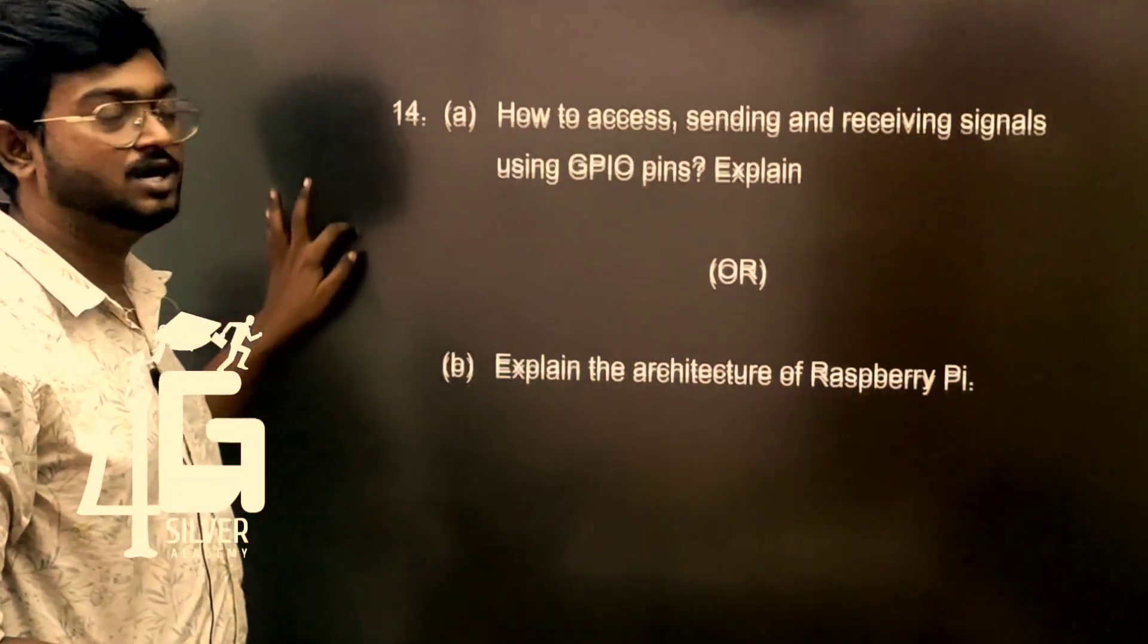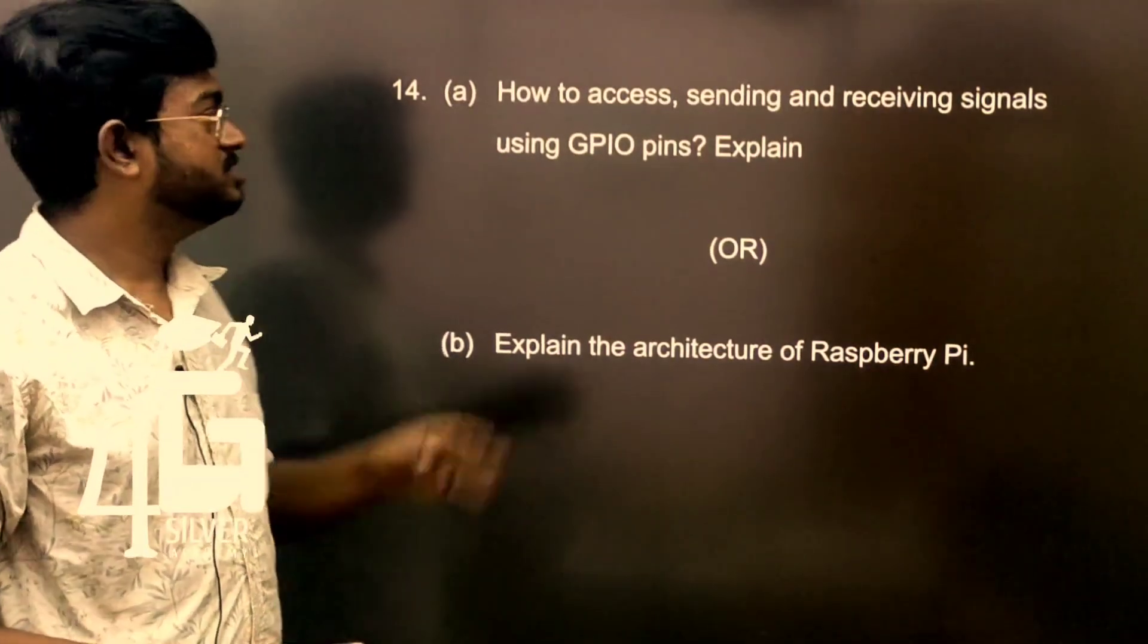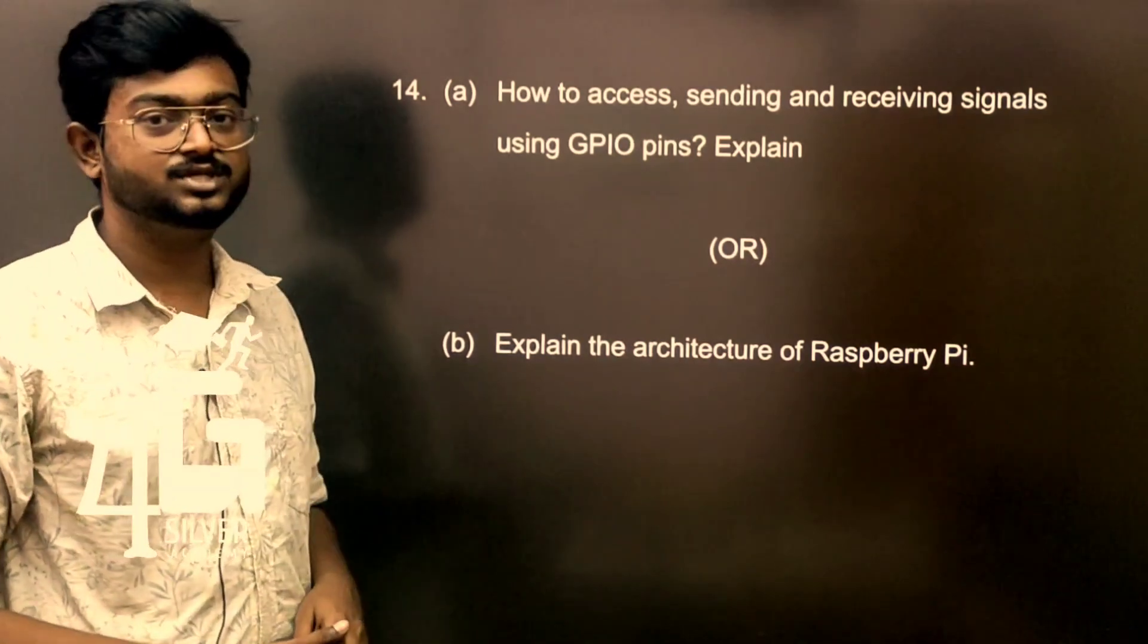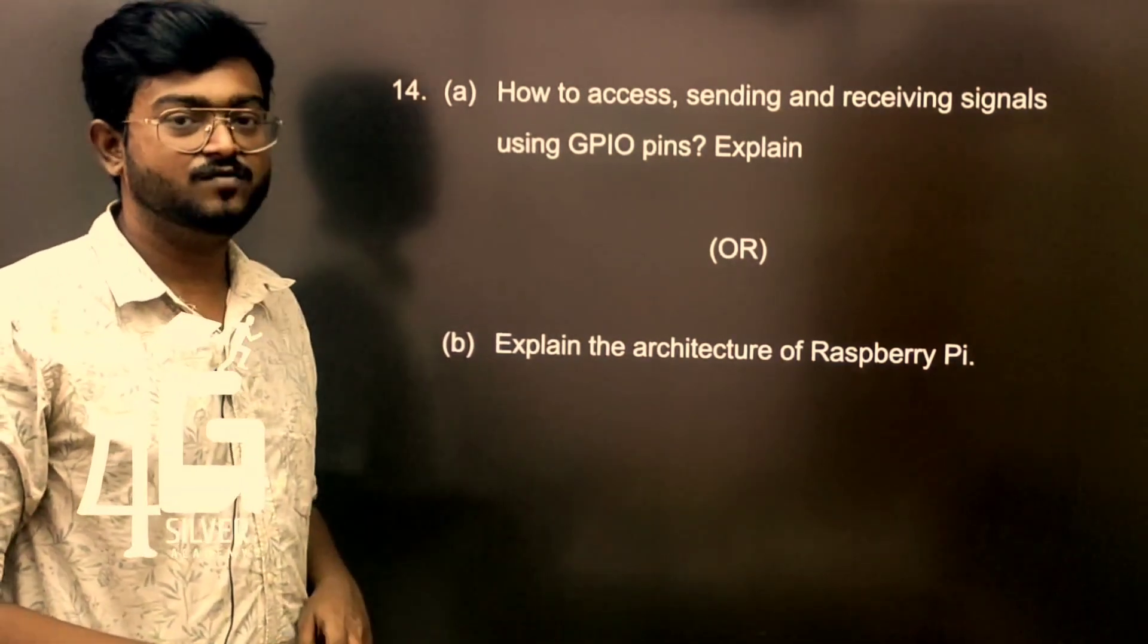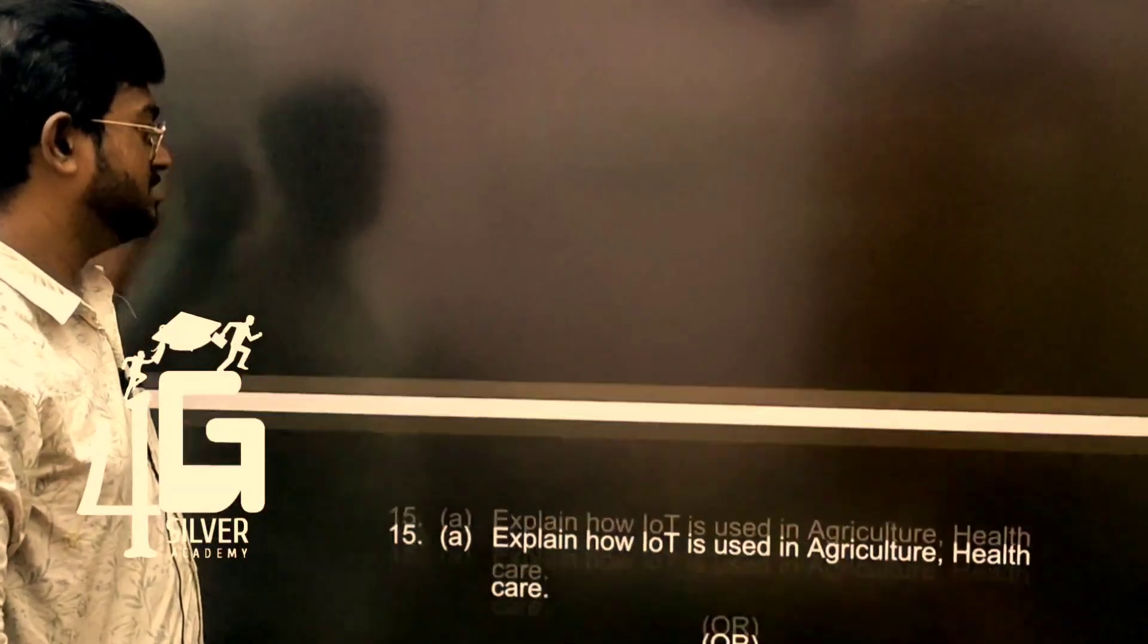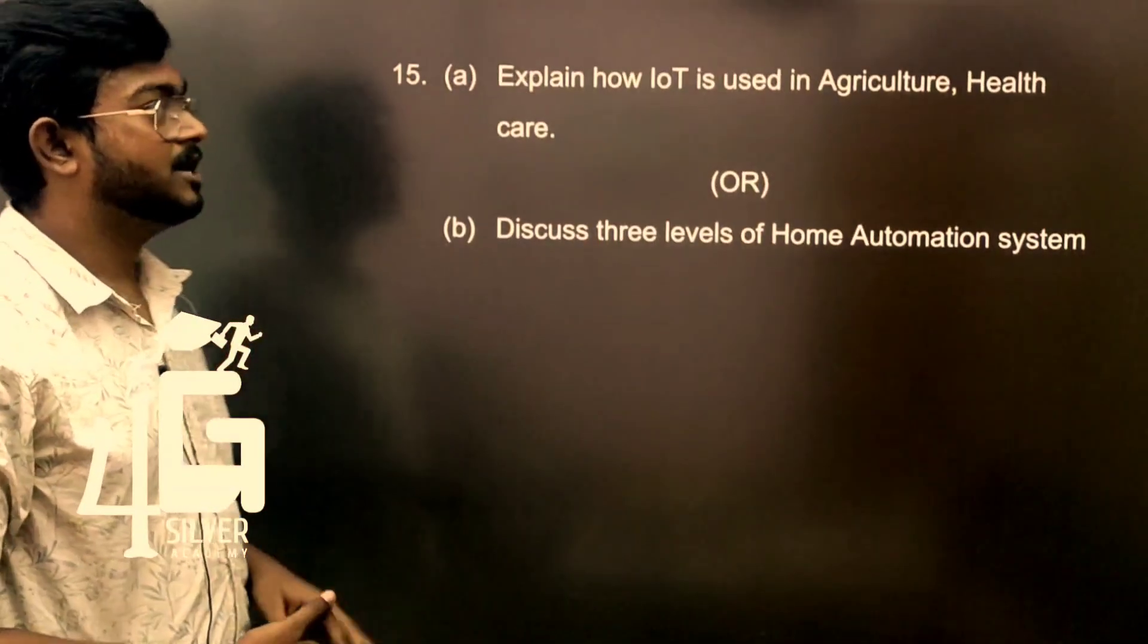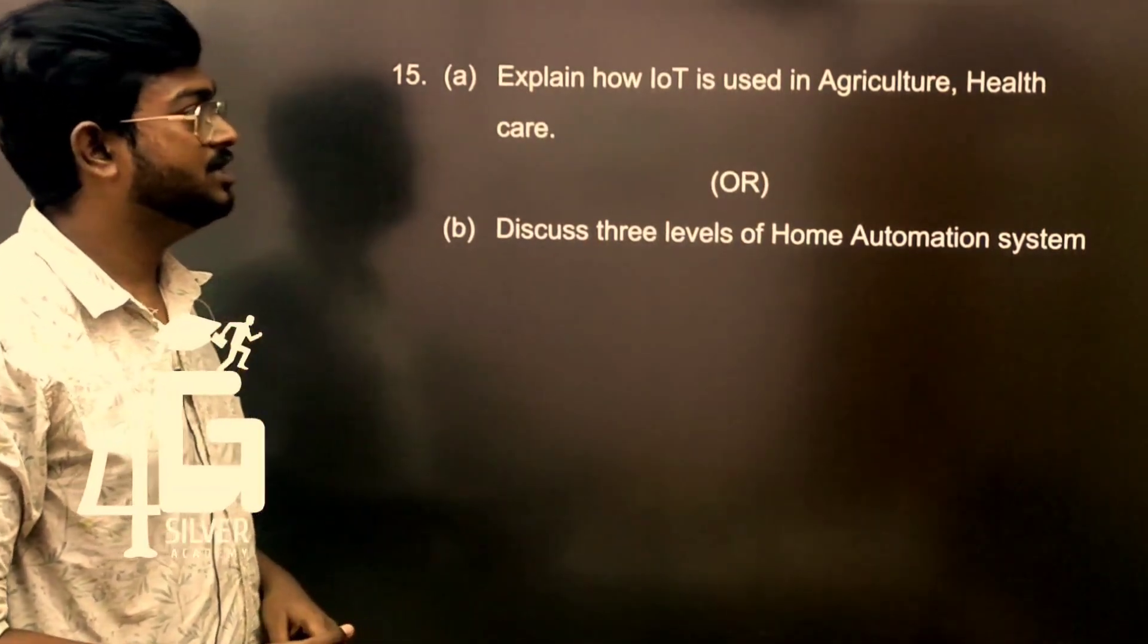Unit 4 important Part B question: How to access sending and receiving signals using GPIO pins? Explain the architecture of Raspberry Pi kit.